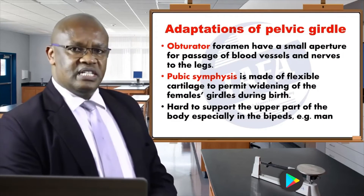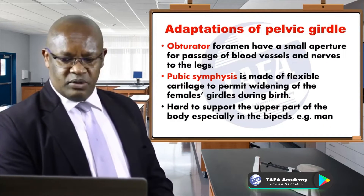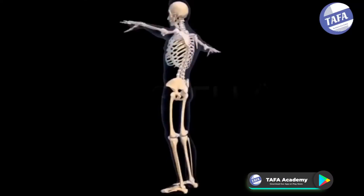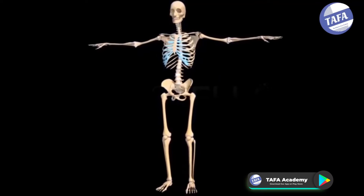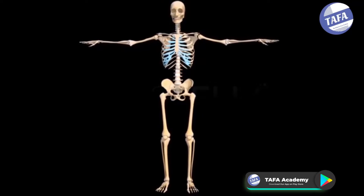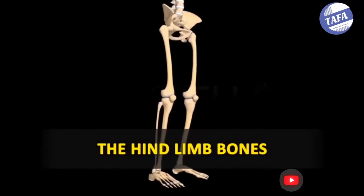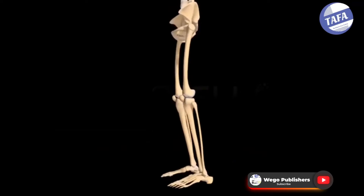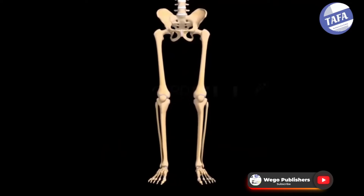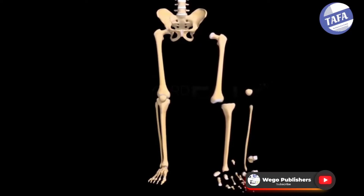At this point I want us to talk about the hind limbs, or what we call the legs. We know that there are two hind limbs, which we also refer to as the legs, and the hind limbs have four or five types of bones.